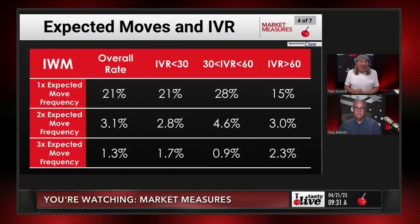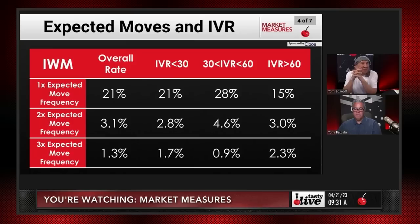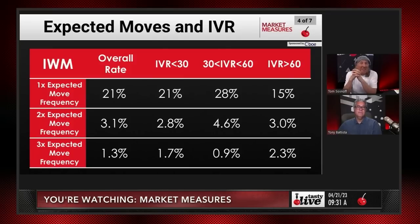IWM is basically the same as SPY. The only difference is that the chance of an outlier move at three times the expected move is much greater than theoretical — almost four times greater, going from 0.3% to 1.3%. At one times and two times expected move it's just like SPY — doesn't happen very often. Over 60 IVR, it's all clean, and the trouble happens right in the middle.